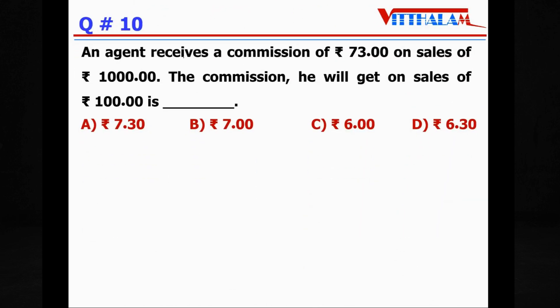Question 10: An agent receives a commission of ₹73.00 on sales of ₹1000.00. The commission he will get on sales of ₹100.00 is? See, commission and sales, that's the two parameters. If sales increase, commission increases. If sales decrease, commission decreases. Therefore, sales is directly proportional to commission.